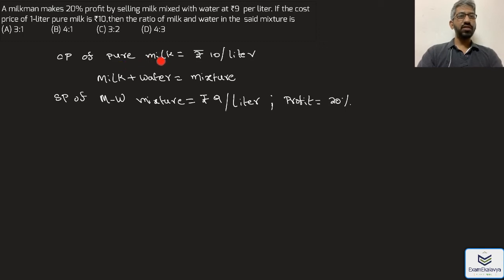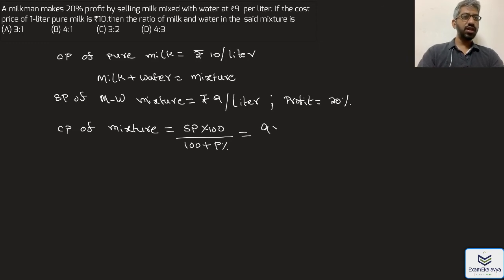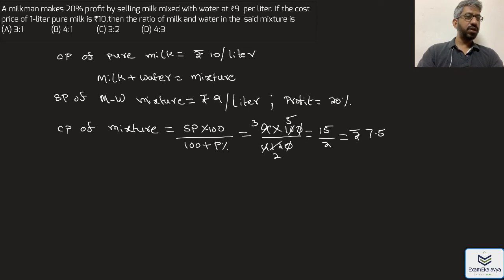The cost price of pure milk is given and the cost price of water is taken as 0 rupees because water is free. To find the required ratio using the rule of allegation, we first calculate the cost price of the mixture: selling price multiplied by 100 divided by 120. That is 9 multiplied by 100 divided by 120, which simplifies to 15 divided by 2, equal to 7.5 rupees per liter.